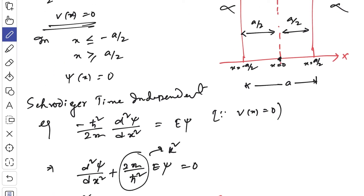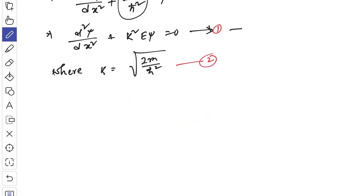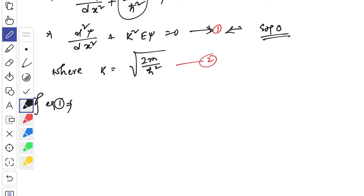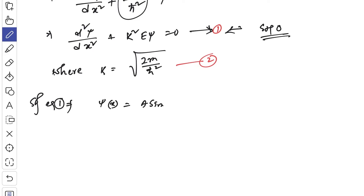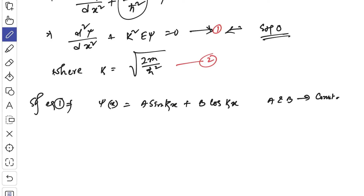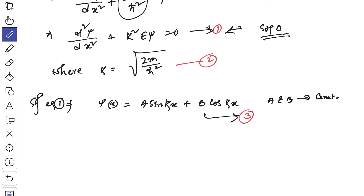The boundary conditions are at x = -a/2 and x = +a/2. Equation 1 is a simple harmonic oscillator equation, so its general solution is: ψ(x) = A sin(kx) + B cos(kx), where A and B are constants (equation 3).